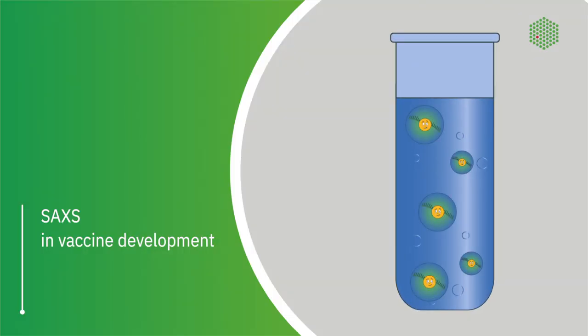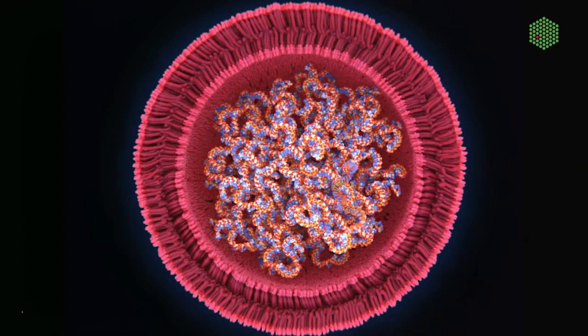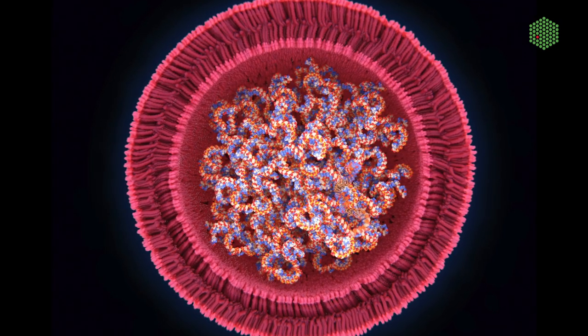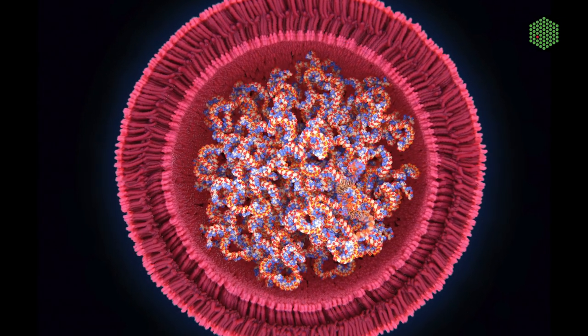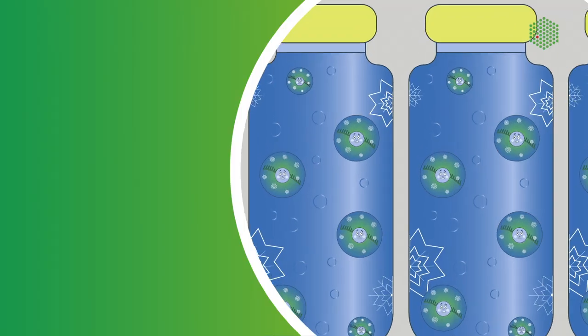How do we use SAXS in vaccine development? SAXS lets us peer inside the RNA nanoparticles of these vaccines but it also lets us work out whether these nanoparticles stay together and ensure that these vaccines arrive to the clinic just as fresh as when it was produced.